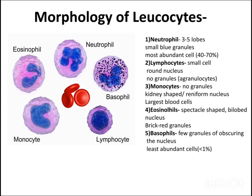Now coming to the morphology of leukocytes. Neutrophils consist of 3-5 lobes, small blue granules, and are the most abundant cell at 40-70%. Lymphocytes are small cells with a round nucleus and no granules. Monocytes have no granules, a kidney-shaped reniform nucleus, and are the largest blood cell. Eosinophils have a spectacle-shaped bilobed nucleus and brick-red granules. Basophils have few granules obscuring the nucleus and are the least abundant cell.